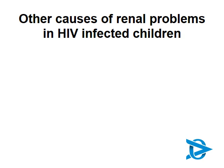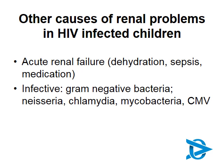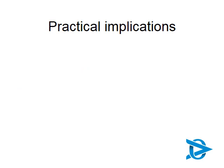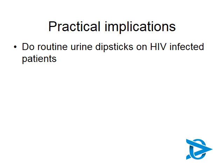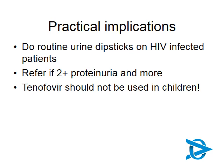We also see causes of interstitial nephritis, particularly with medication — HIV-infected children are more likely to be treated with drugs such as aminoglycosides, which can be toxic to the kidneys. There can be direct infiltration of the kidneys by mycobacteria, which can also cause interstitial nephritis. Very ill children can go into acute renal failure due to dehydration, sepsis, or medication. Infective causes can directly affect the kidneys — gram-negative bacteria, mycobacteria, chlamydia, or CMV. We do need to do routine urine dipsticks on HIV-infected children. If there's two-plus proteinuria or more, that will justify a referral. Tenofovir is not routinely used in children — we're particularly concerned about the hypophosphatemia it can cause, which could be asymptomatic with a normal creatinine, and could contribute to osteoporosis during a growth spurt.